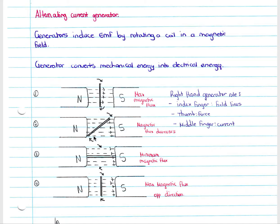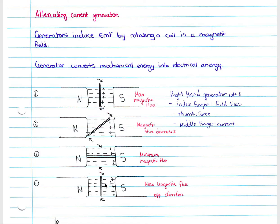If we label the top part of the coil A and the bottom part B: at the start, current at point A flows towards us. After 180 degrees of rotation, point A moves to the bottom and point B is now at the top. The current at point A now flows away from us, and at point B it flows towards us — the direction of current through the coil has switched.